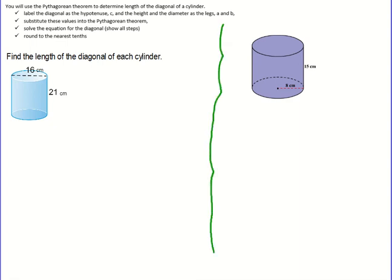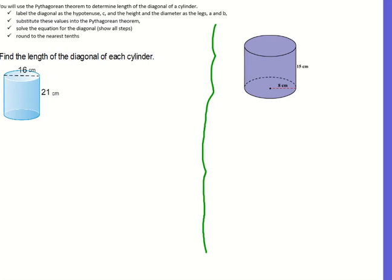So in this example we're going to find the length of the diagonal of each cylinder. In the first example I'm going to draw my diagonal on here, going from one corner to the opposite corner. I'm going to also draw my diagonal on this one as well.